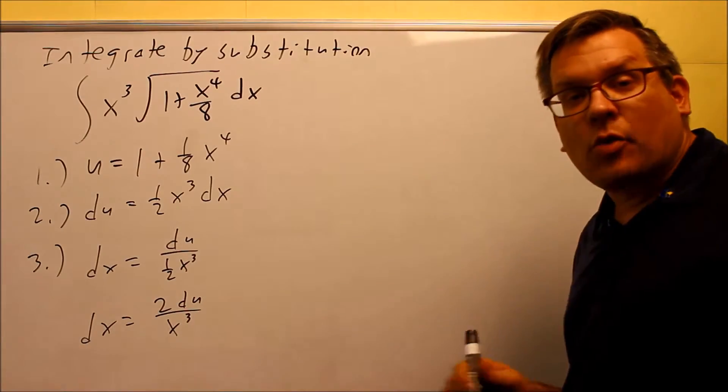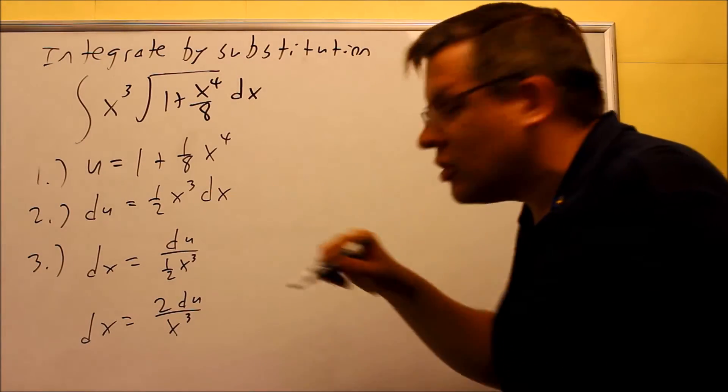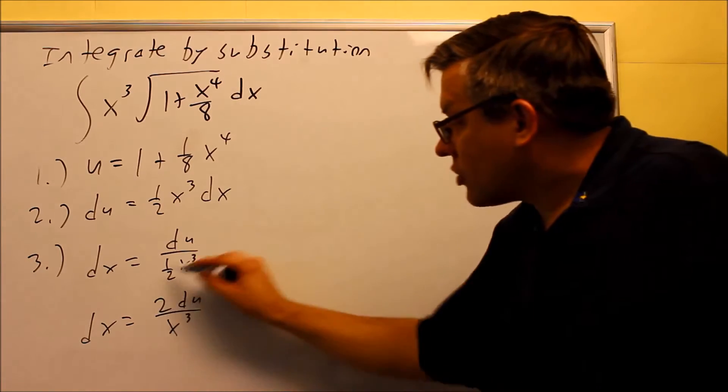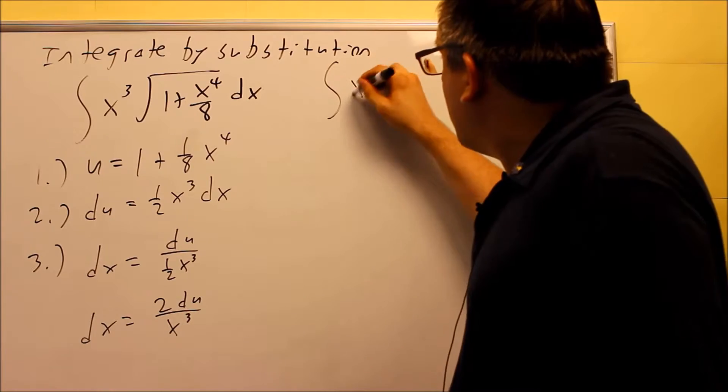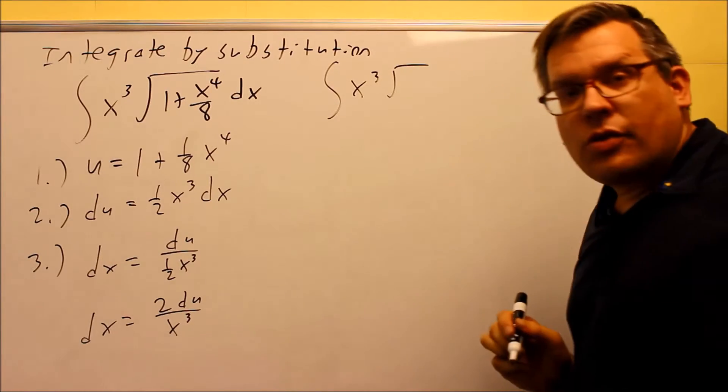so therefore your dx is equal to 2 du over x cubed. So that's going to be easier now to plug in, we're not dividing, have one fraction divided by another. This we can now put it back into our original integral. So if we do that, we have x cubed,